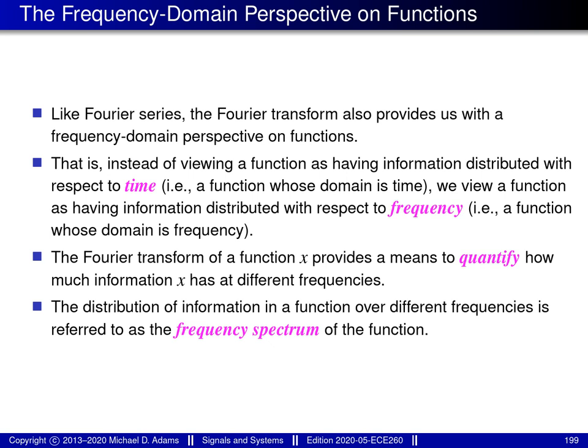Think of a function. Essentially, a function embodies information of some sort. The traditional way to view this information is as being distributed with respect to time — in other words, the function is viewed as having a particular value at each point in time. The Fourier transform, however, provides a new way to view the information embodied by a function: instead of viewing it as distributed with respect to time, we can view it as distributed with respect to frequency.